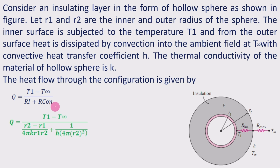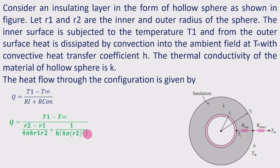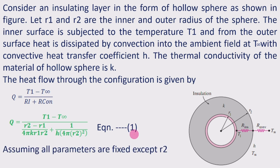So q equals T1 minus T∞ in the numerator. For the sphere, the conduction resistance is (R2 − R1) / (4π K R1 R2), where R1 and R2 are the inner and outer radii and K is the thermal conductivity, plus the convective resistance for the sphere at outer radius R2, which is 1 / (H × 4π R2²). This is taken as Equation 1.